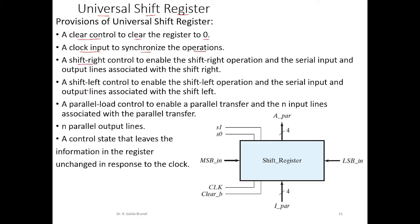Then we have a right shift operation. The right shift control will enable the right shift operation and the serial input and output lines associated with the right shift. We also have a left shift operation, where the left shift control enables the left shift operation and its associated serial input and output lines. Then we have parallel load — the parallel load control enables the parallel transfer of n input lines. There are n output lines. Finally, to retain the information of the register, we have a control to keep the content of the register unchanged.